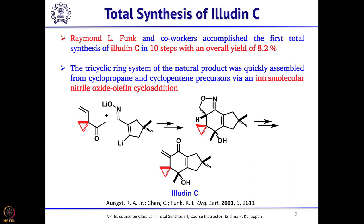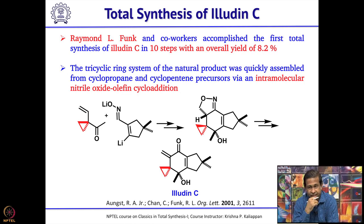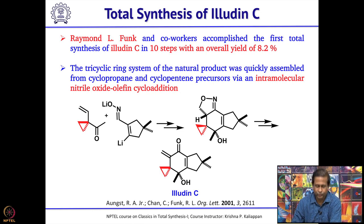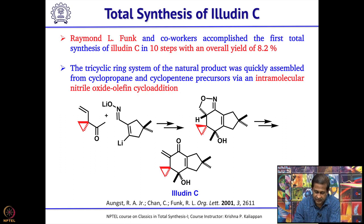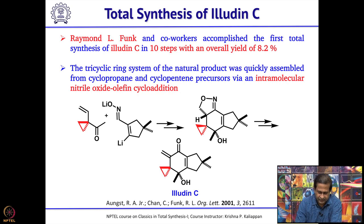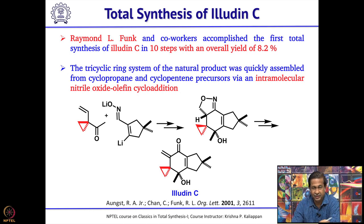The other natural product we will discuss is illudin C, reported about 20 years ago by Raben Fung in about 10 steps with a high overall yield of 8.2 percent. Here another 1,3-dipolar cycloaddition was used—nitrile oxide olefin cycloaddition as the key reaction. Addition of a lithium species to a ketone followed by nitrile oxide formation and intramolecular dipolar cycloaddition gives a tricyclic compound convertible to illudin C.